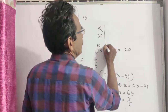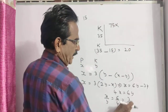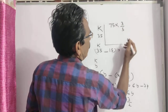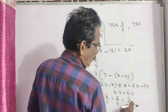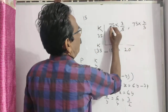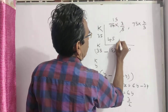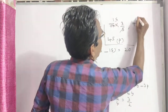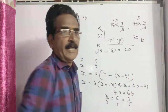75 into 3 by 5 gives the age of Parag, and 75 into 2 by 5 gives the age of Kalyan. So the age of Parag is 45 years, and the age of Kalyan is 30 years.